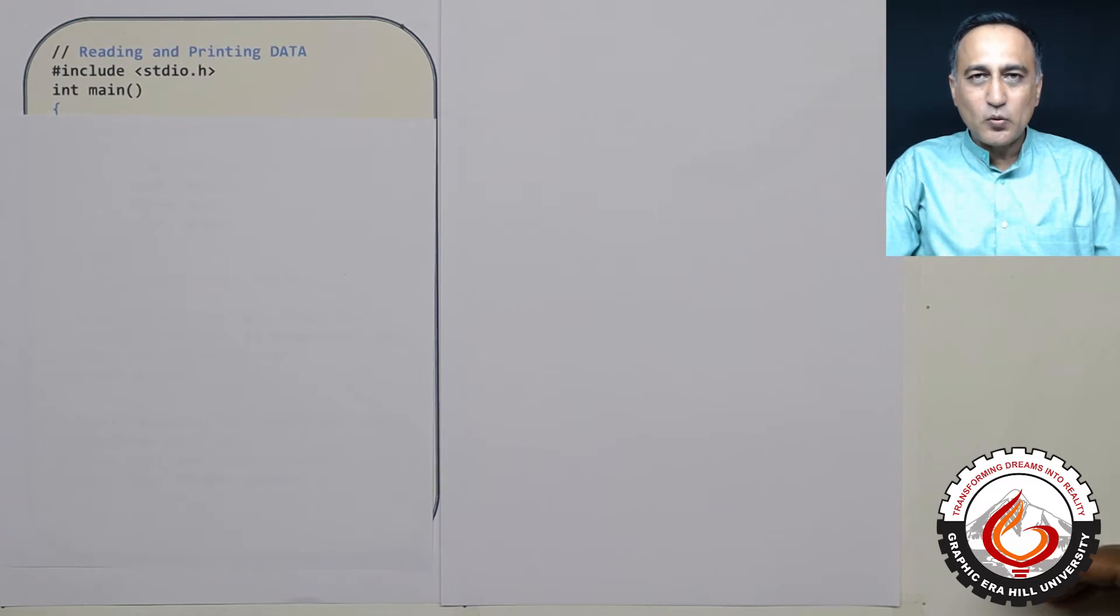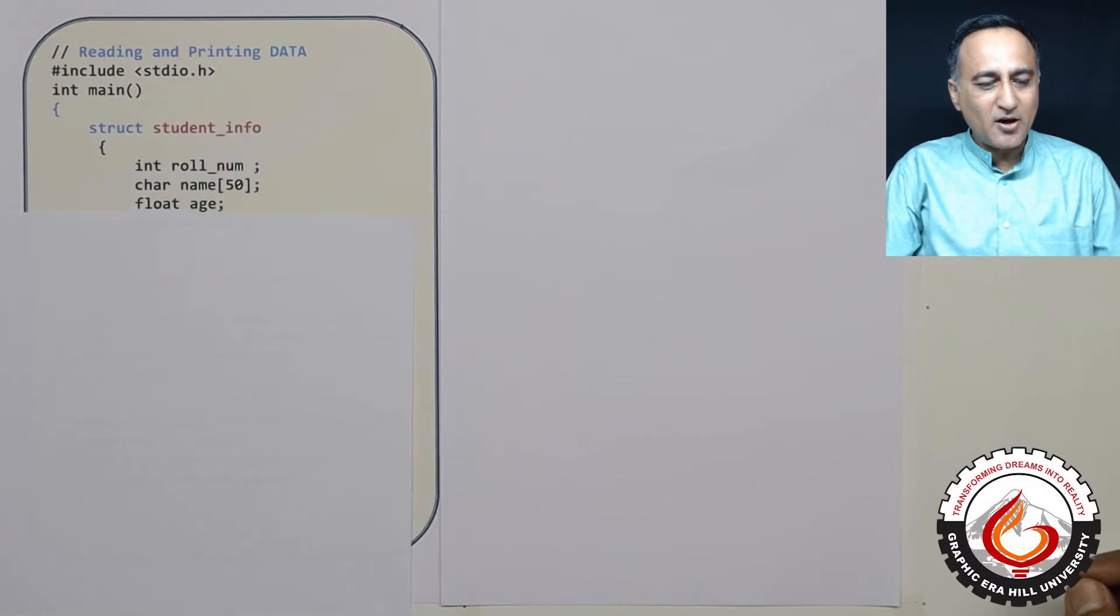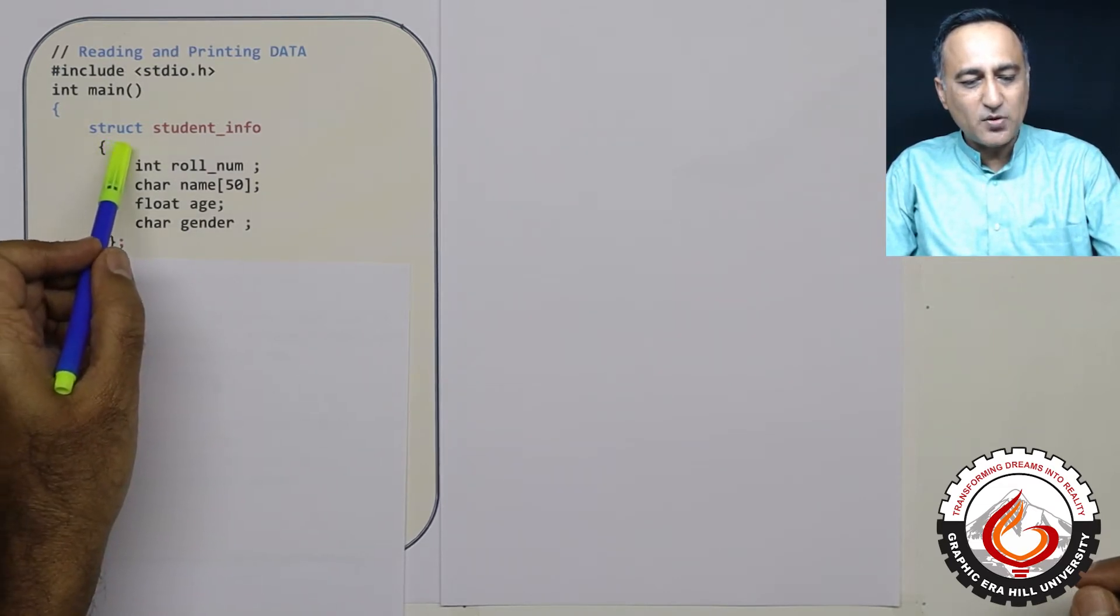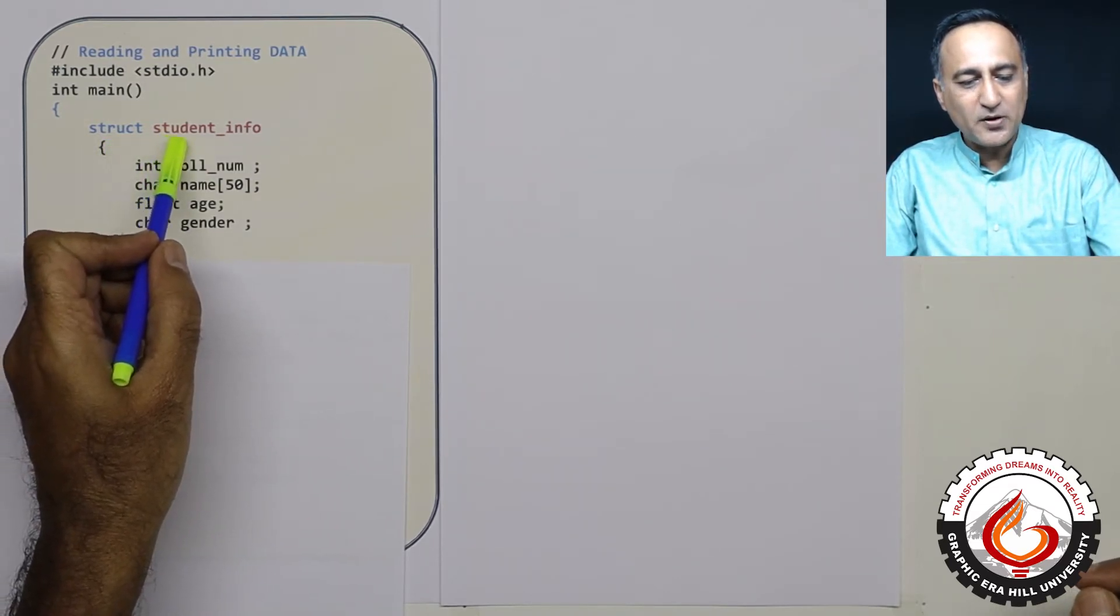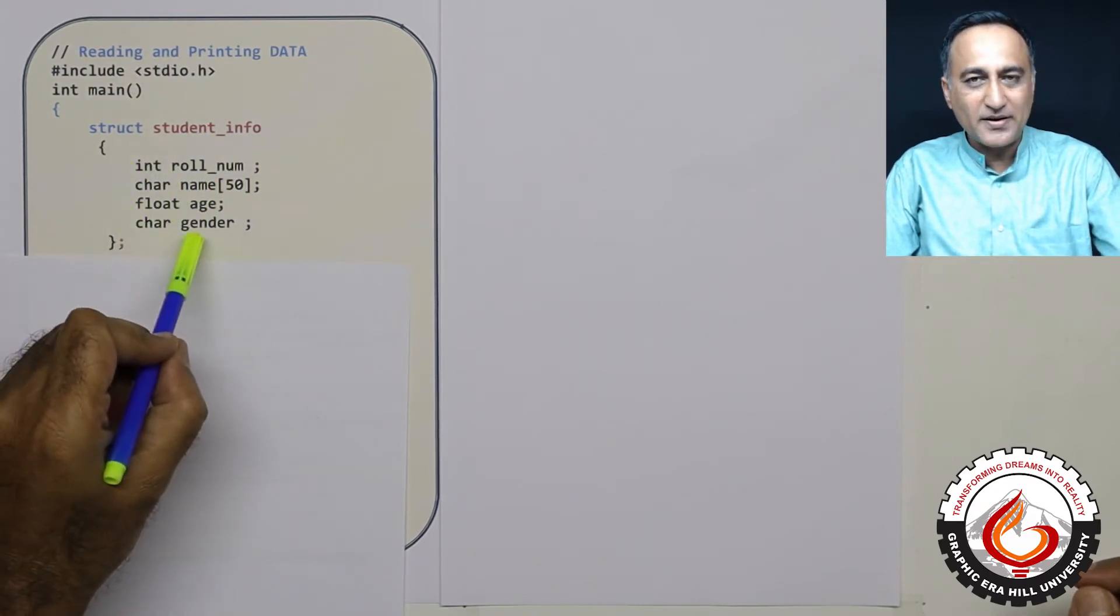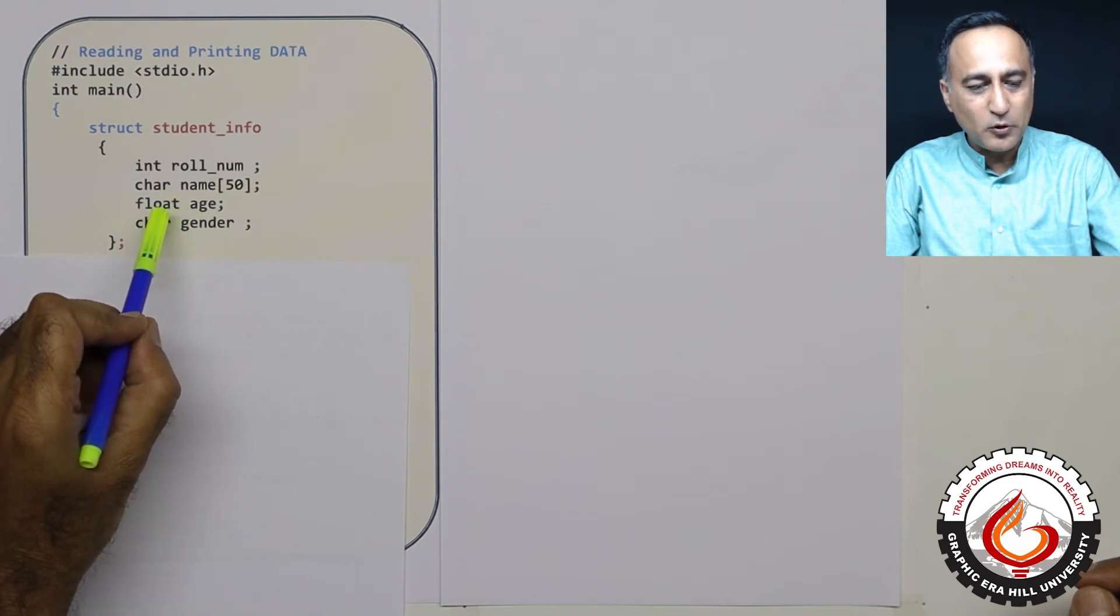The first thing is, in order to read and print data from a structure variable, we need to declare or create the model structure or blueprint. Here if you see using the struct keyword, I have declared a blueprint whose name is student_info. Just to emphasize, no memory is allocated here. This is just a model or a blueprint.